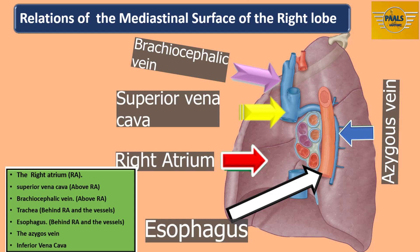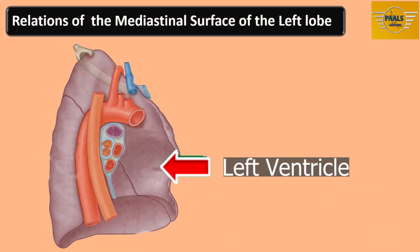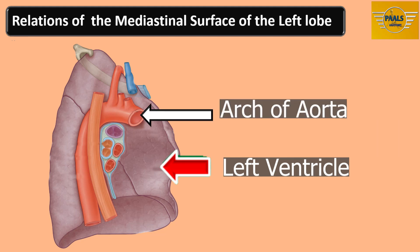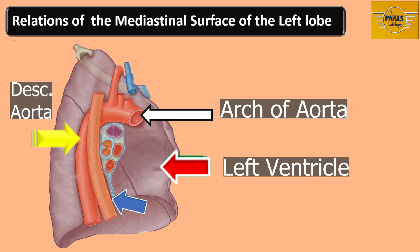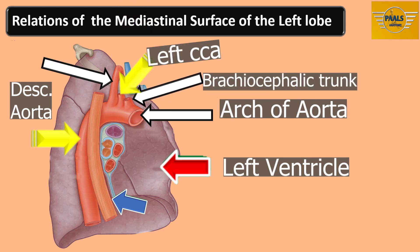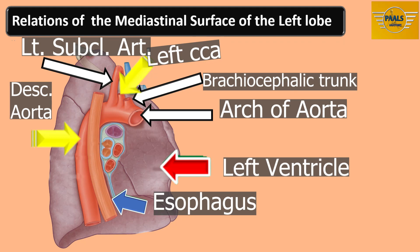We also see the vagus nerve behind the hilum and the right sympathetic chain. On the left mediastinal surface, the left ventricle makes the deep cardiac impression on the left lung. The arch of aorta comes out from the left ventricle, with its major branches also making impressions on the left mediastinal surface. We have the descending aorta and branches from the arch: the brachiocephalic trunk, the left common carotid artery, and the left subclavian artery. We also have the oesophagus and the three neural structures — the phrenic nerve, the vagus nerve, and the sympathetic chain.